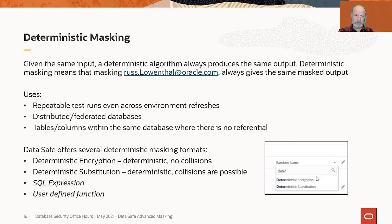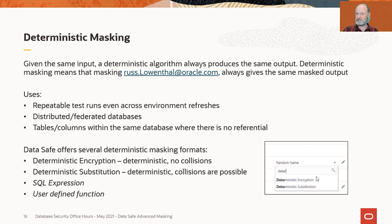Another reason to use deterministic masking is applications that don't use referential integrity even within a single database, yet depend upon key values being the same in different tables. Without referential integrity, data masking doesn't know that the first name in one table should match the first name in another table, so it can't mask them together unless you use deterministic masking. Data Safe offers two different formats for deterministic masking: deterministic encryption and deterministic substitution. You'll also see SQL expression and user-defined function, but most of the time when talking determinism, you're talking encryption or substitution.